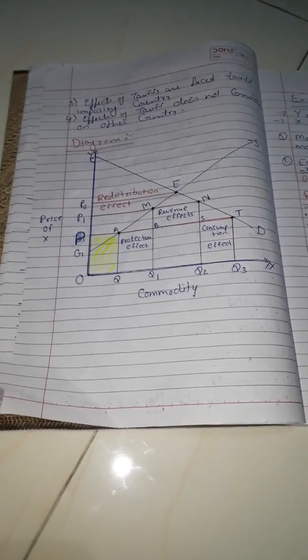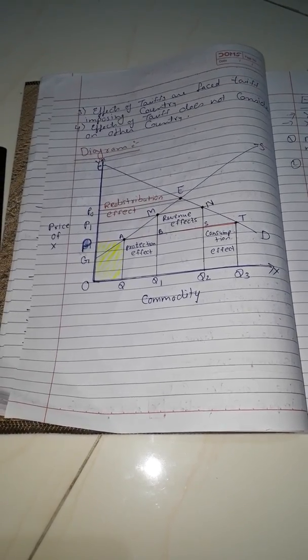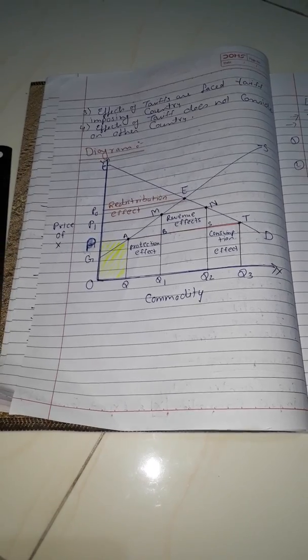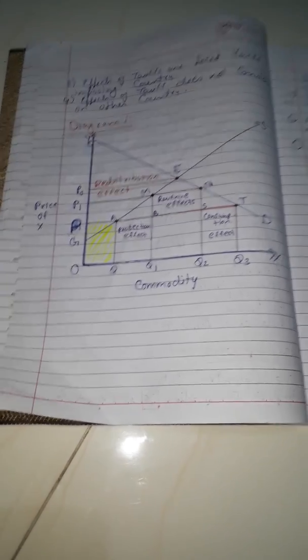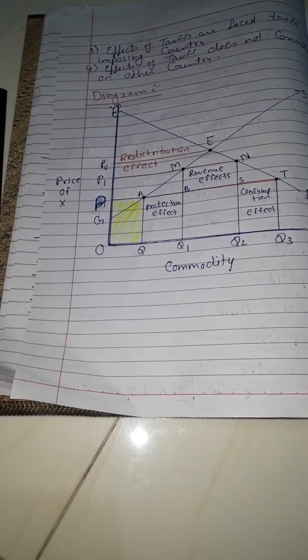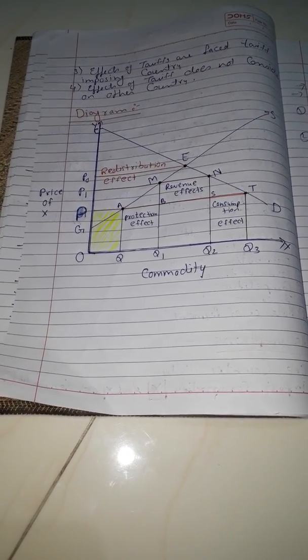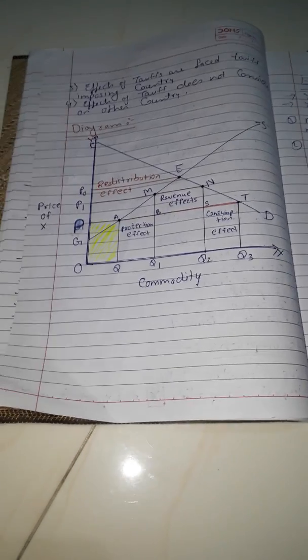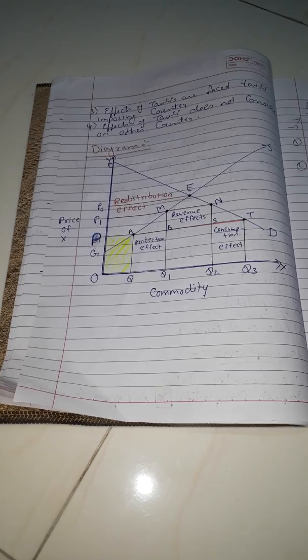Now the very important part of the answer is the diagram. Many students get confused while making the diagram. First you will draw the demand curve and supply curve, then a horizontal line and vertical lines. On the Y-axis we represent the price of commodity X, and the X-axis represents the quantity of the commodity. The demand curve is CD and the supply curve is GS, which is upward sloping.